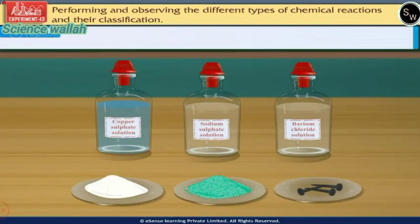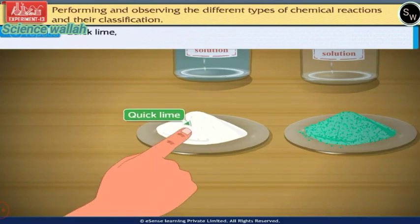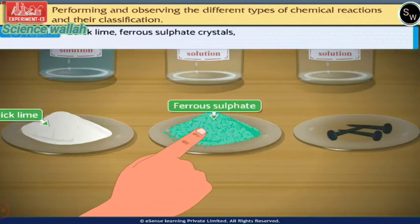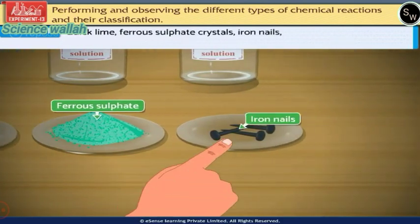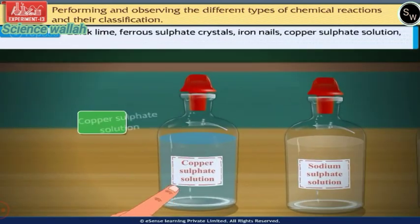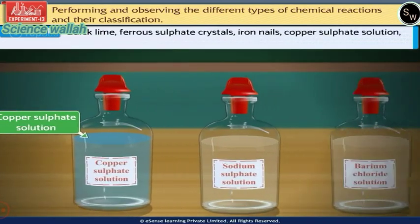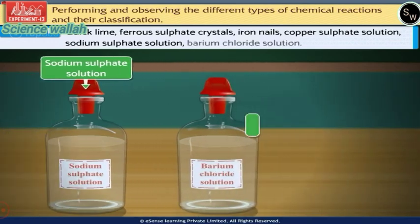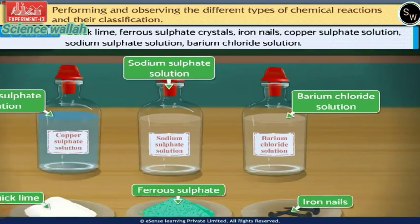Chemicals required are quick lime, ferrous sulphate crystals, iron nails, copper sulphate solution, sodium sulphate solution, and barium chloride solution.